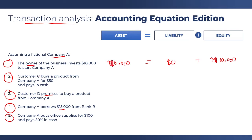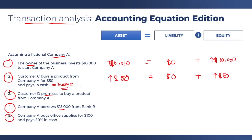For the second one, customer C buys a product from company A for $50 and pays in cash. Since we received cash again, we have a $50 increase in the asset side. Assuming that this is income — meaning it is earned during the current year — our liabilities will still not increase, but our equity will increase by $50. As we discussed in the equity video, income could be resources coming from the pockets of the customers, which increases our equity.